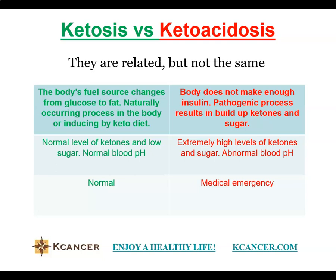But in ketoacidosis, there is no such self-regulation because the sugar cannot be consumed, so the body is constantly signaled to go through ketosis, causing ketone bodies to accumulate. This results in a metabolic imbalance. Because ketone bodies are acidic, the pH of the blood reduces. In normal ketosis, ketone levels are normal and regulated, so the pH remains correct.